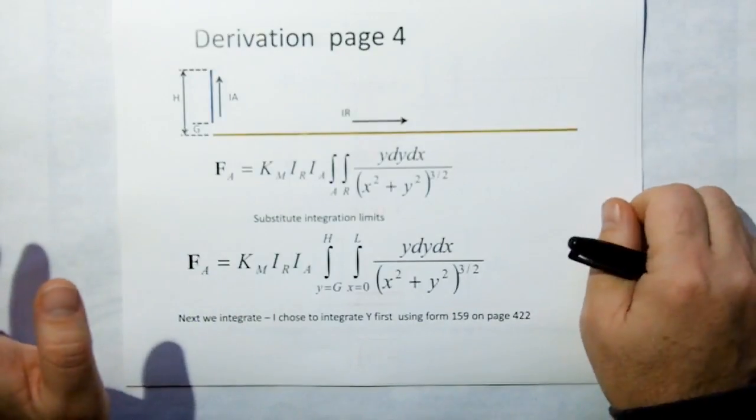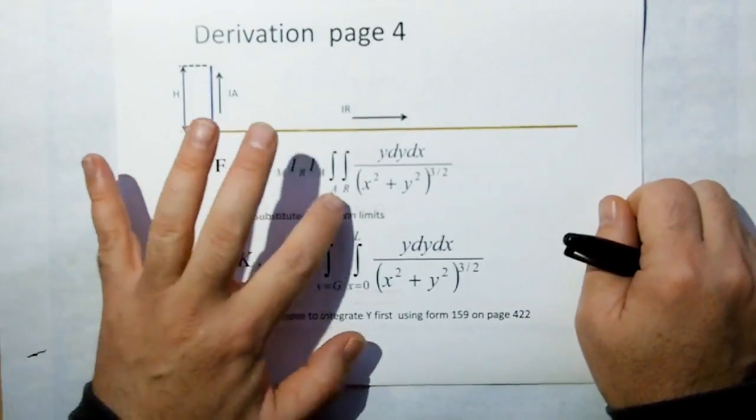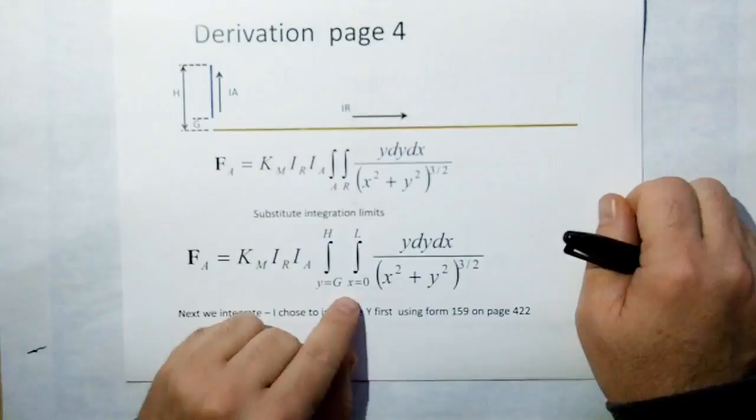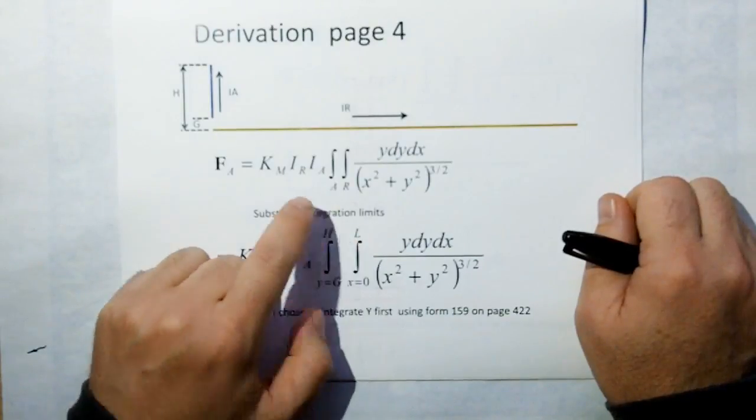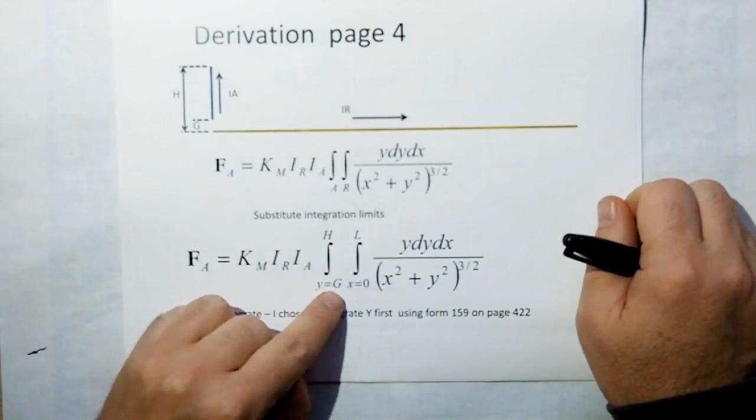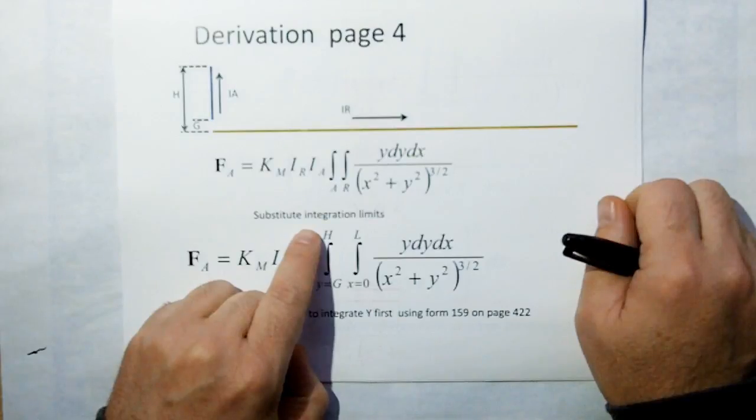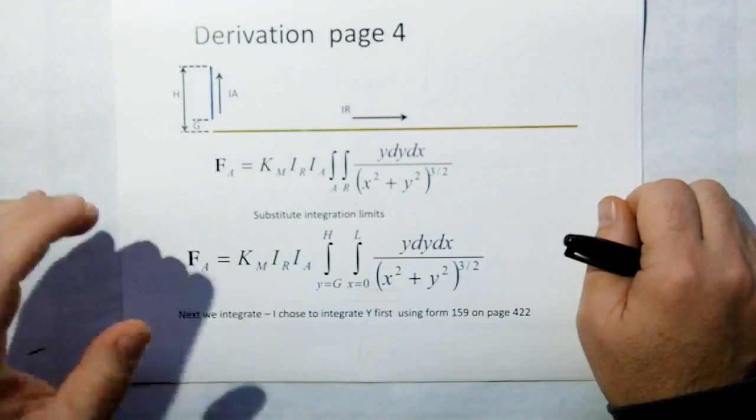The next step we're going to just multiply through. Now we're going to substitute the integration limits. The rail is going to be integrated from X equals 0 to L. The armature is going to be integrated from Y equals G to H.